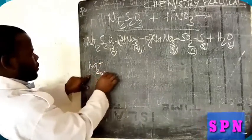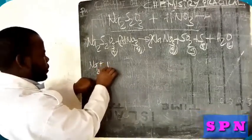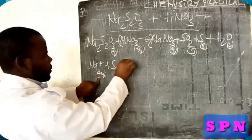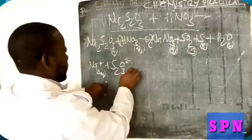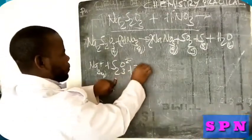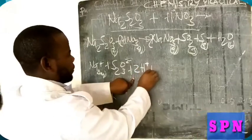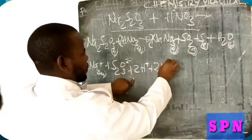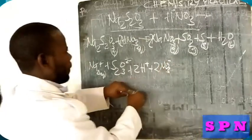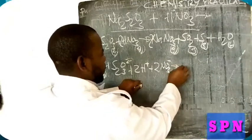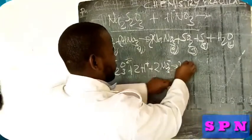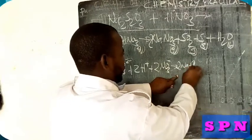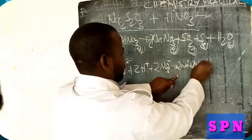Na+ plus SO3^2- plus 2H+ plus 2NO2- gives 2Na+ plus 2NO3- plus SO2 plus S plus H2O. This is the expanded ionic form.